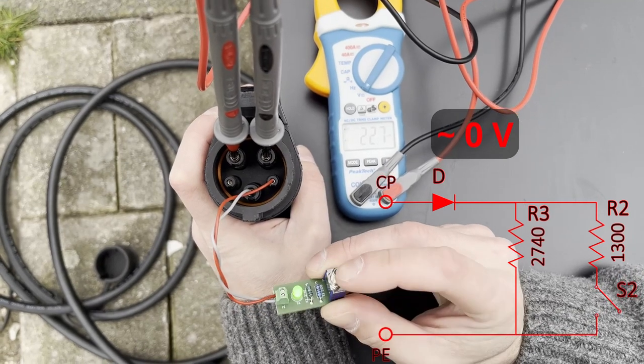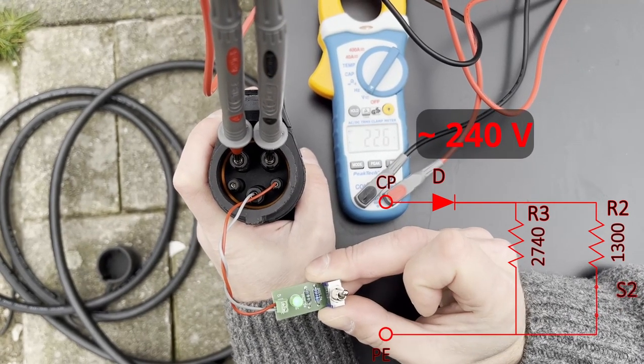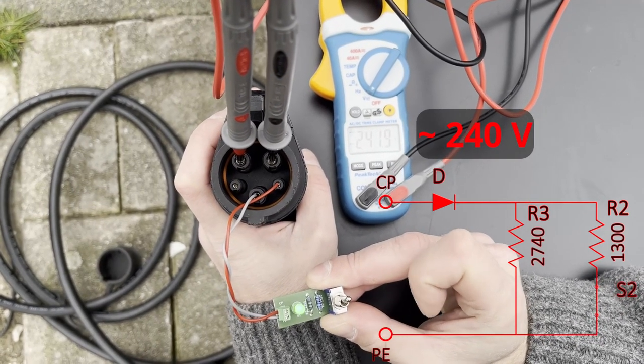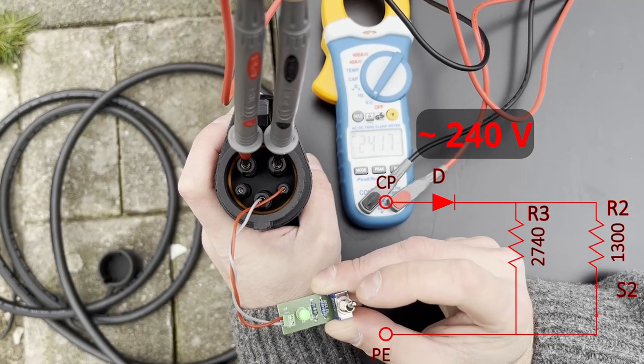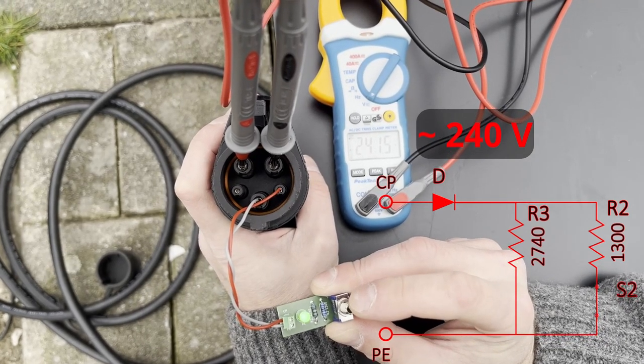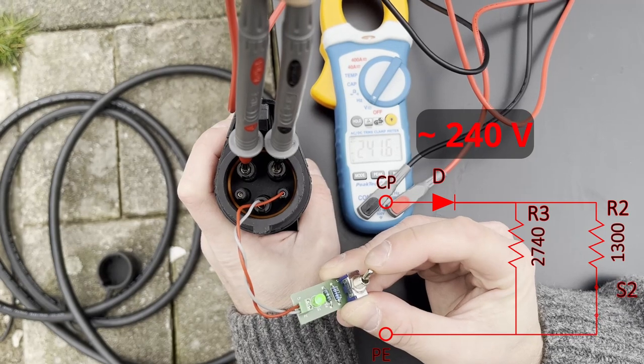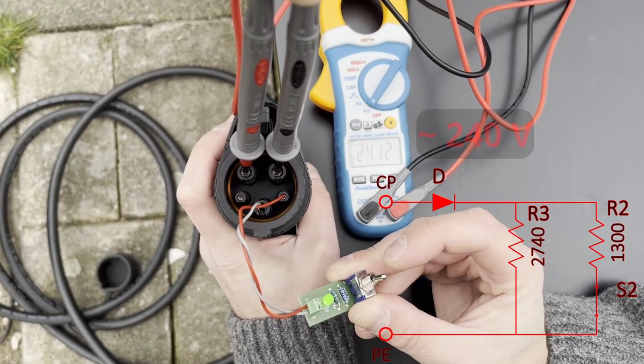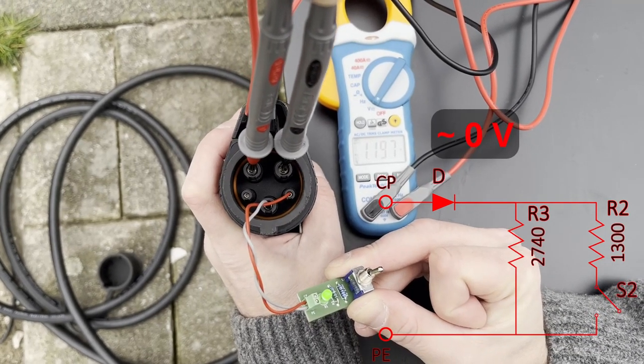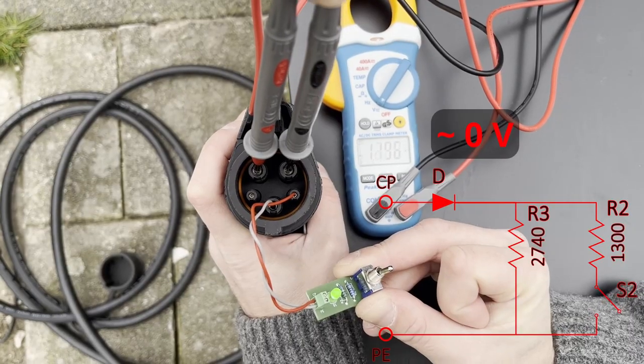This is the circuit onboard the electric vehicle to tell the charging station that it's connected to the charging station, and it closes or opens the switch to tell the charging station to connect or disconnect the electric grid to the vehicle.